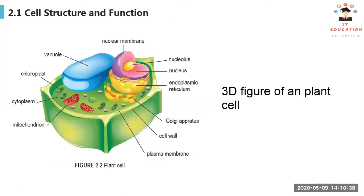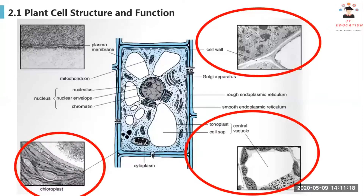Next we'll be moving on to the plant cell. Plant cells also have all the organelles like animal cells. You just have some extra ones, which are the cell wall and then the chloroplasts, and the vacuole, which animal cells do not have. We have the cell wall here to maintain the shape of the cell, and then the chloroplasts.